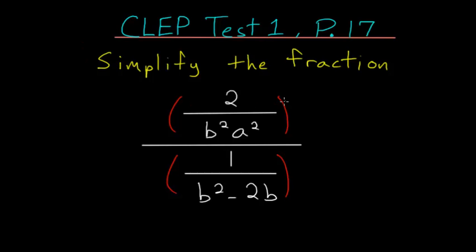In this problem we need to simplify a complex fraction, and at first something like this looks complicated, but it follows the exact same rules as if we had one-fifth divided by two-thirds.